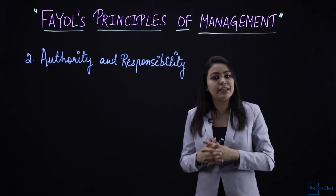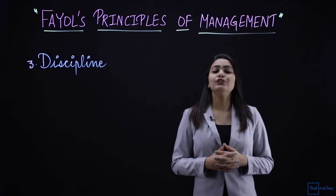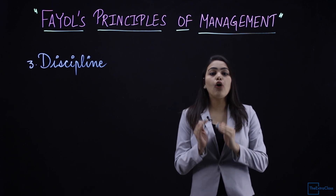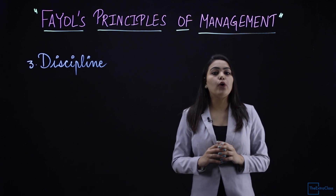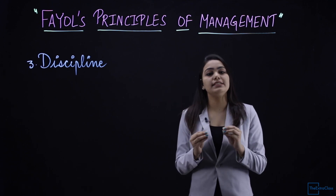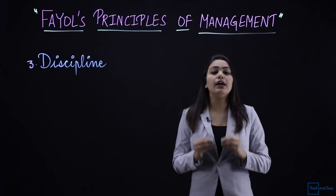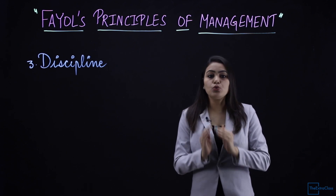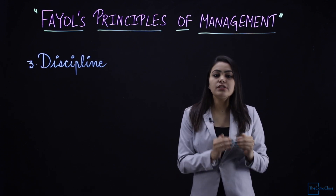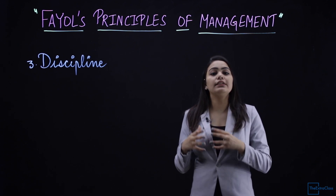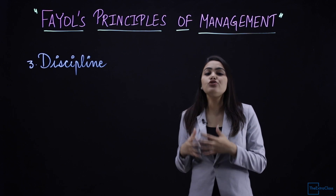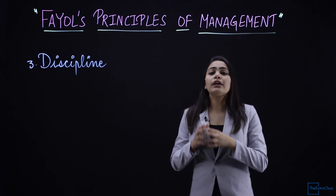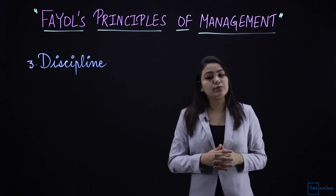The next principle of management is Discipline. According to Henry Fayol, discipline basically means respect towards the organization's rules and regulations, or obedience towards the organization's rules and regulations.